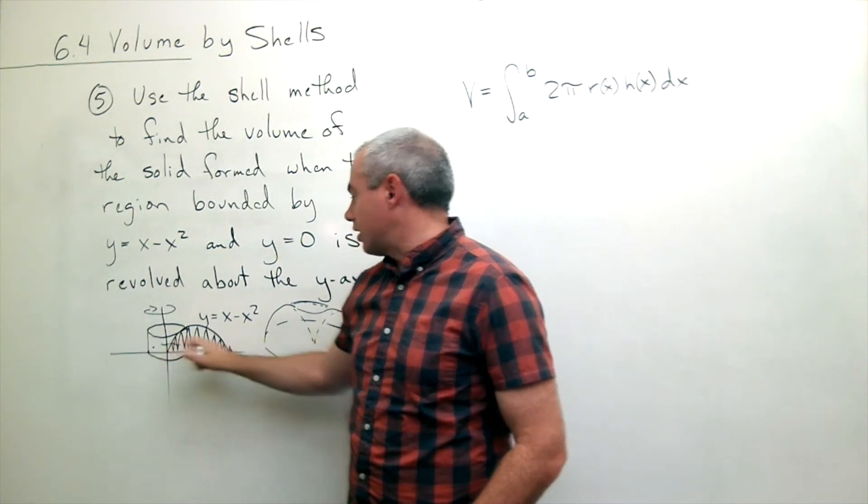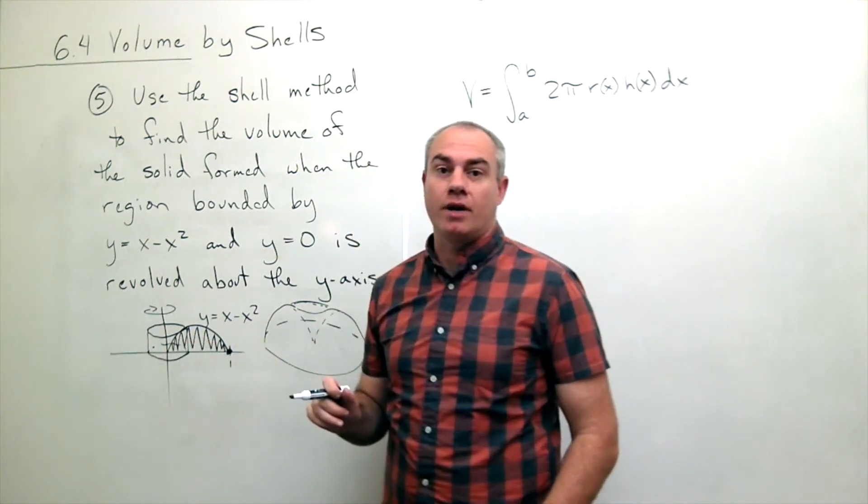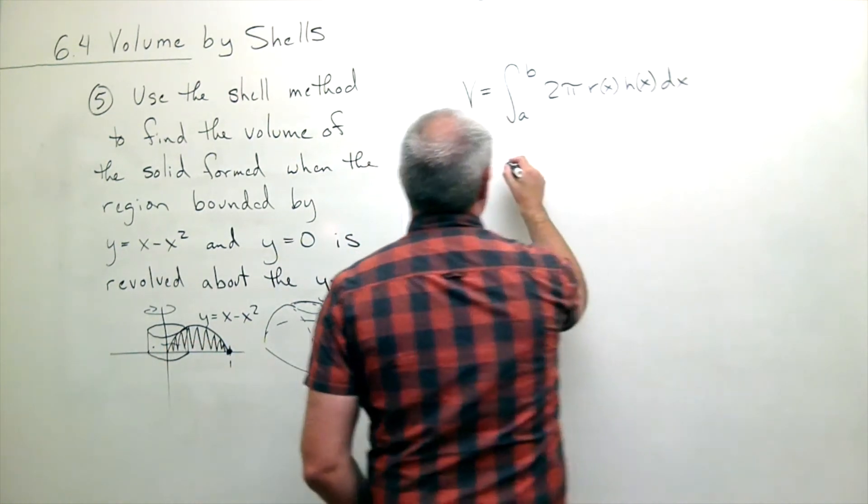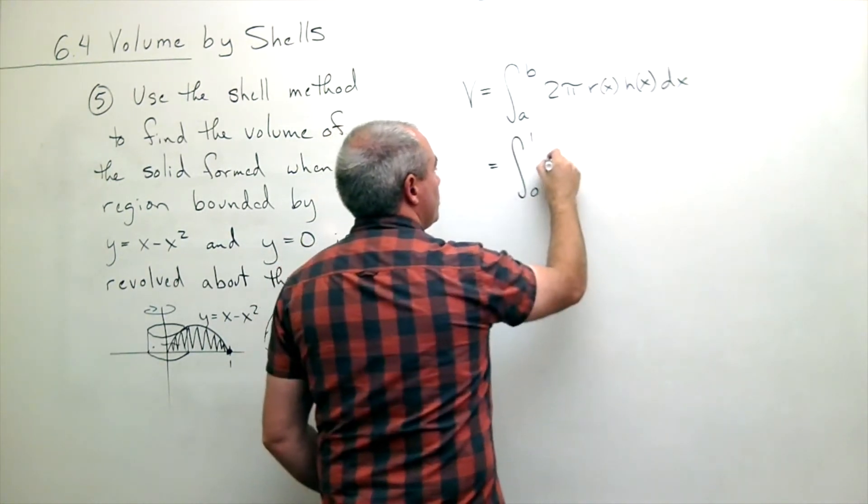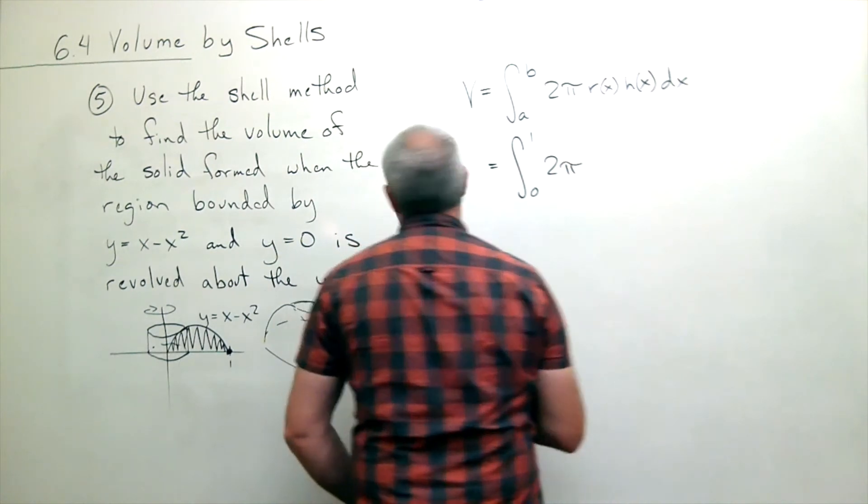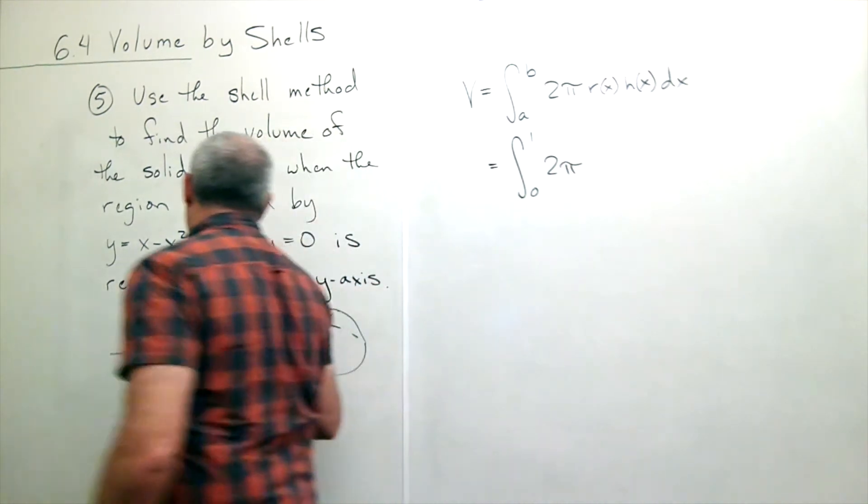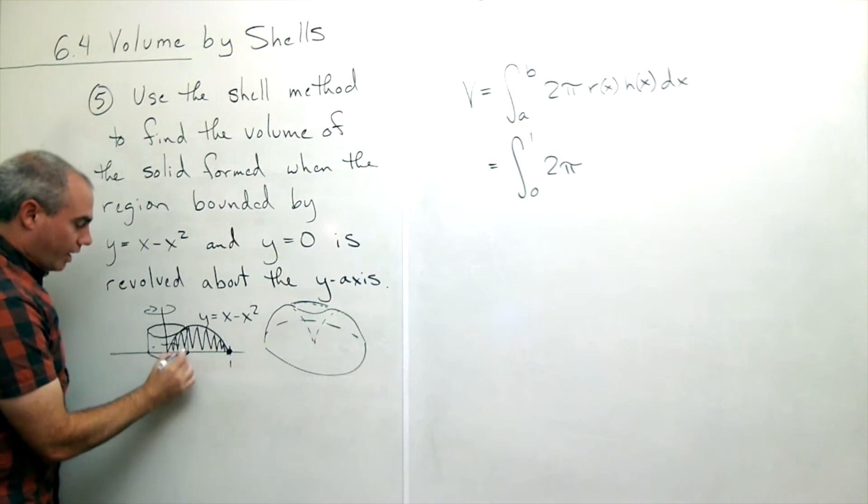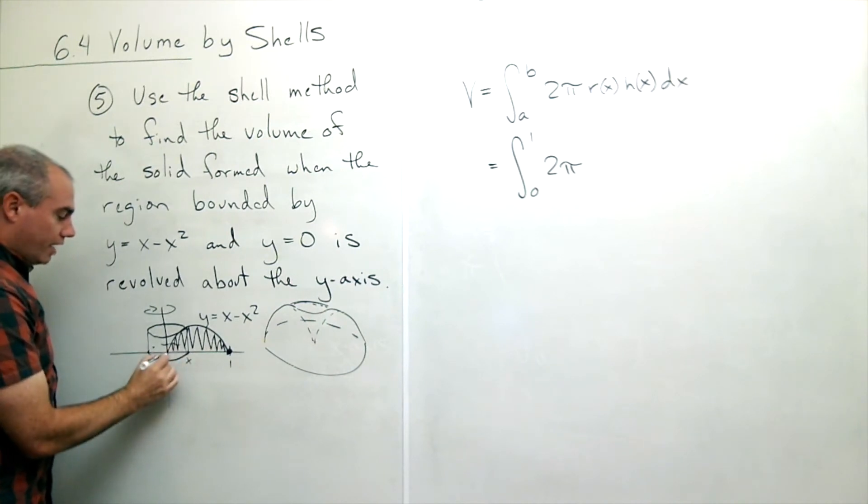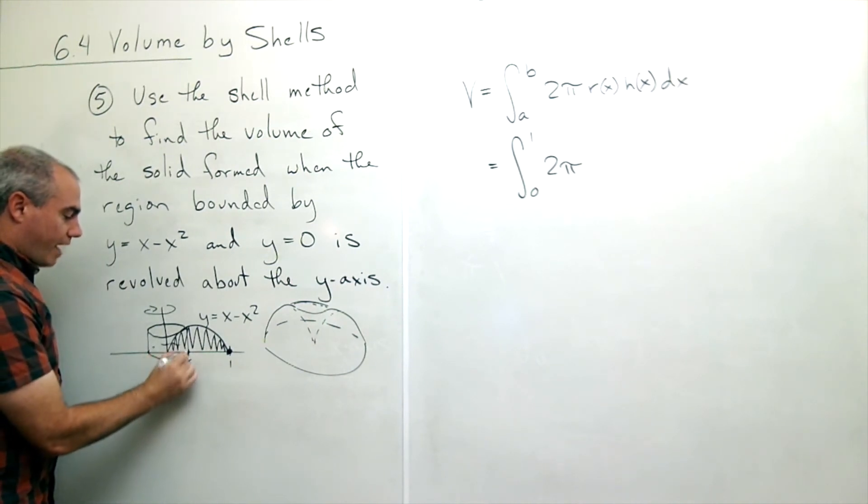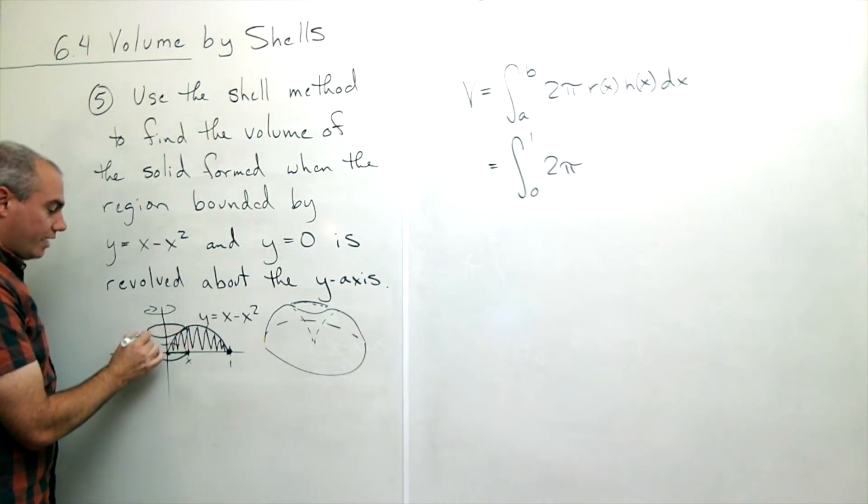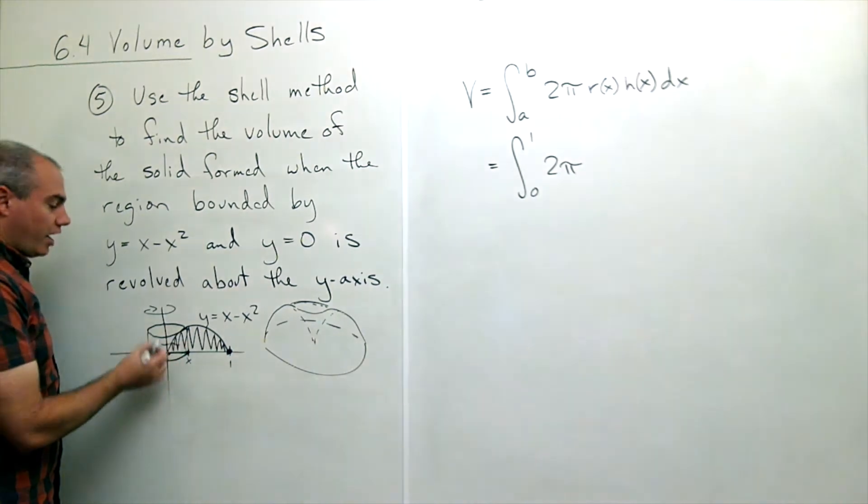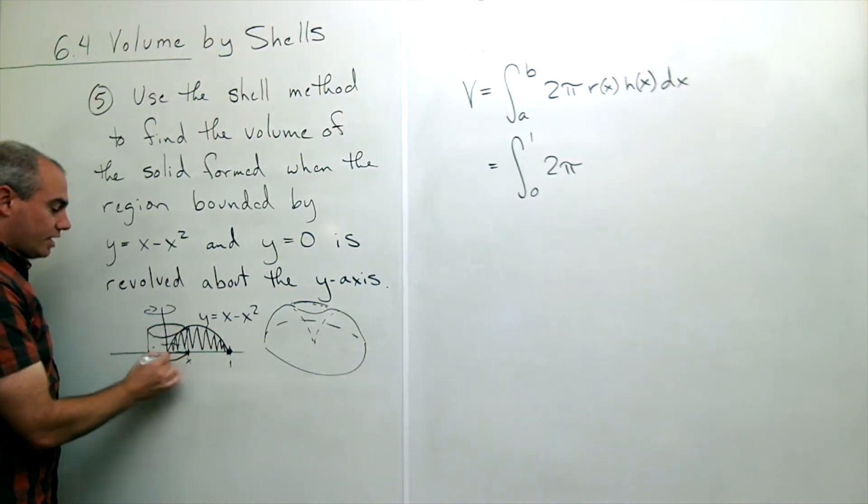So I start cutting at zero, I stop cutting when I get to one. So in this particular case I'm going to start at zero, end at one, 2 pi is in there, r is talking about okay if I'm over here at a point x then how far is it from that point x to the center of my cylindrical shell or my cylinder and you can see that how far it is to the center is exactly x. So the radius in this case is just x.